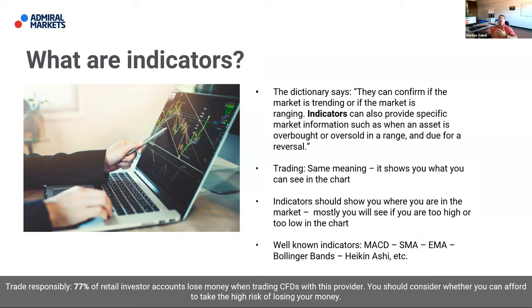And of course there's Bollinger Bands and Heikin Ashi — which is an interesting expression of candles. Heikin Ashi is a kind of indicator. You have two candle types: trend continuation or a balanced candle. Heikin Ashi rules the battlefield.